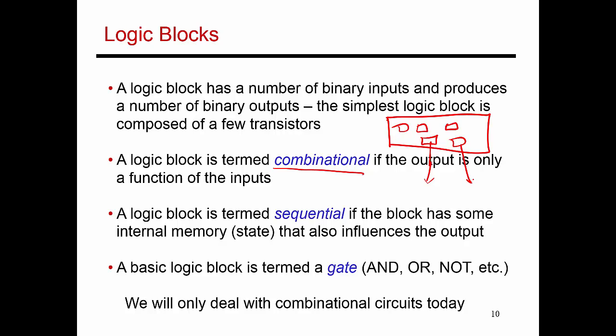But if a separate logic block also keeps track of some state, if it has some memory saying that in the recent past I saw X, Y, and Z, I'm going to remember that state. When I receive inputs, I'm going to combine these inputs with my state to produce my outputs. If that's what happens, then that logic block is referred to as a sequential circuit.